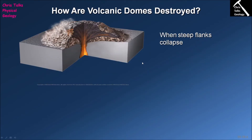Volcanic domes have a rather short life — they don't tend to last that long. Why are they so commonly destroyed? First, a volcanic dome is made of very badly brecciated volcanic rock, meaning it's very granular and not particularly well consolidated. This makes the dome very prone to collapse — the side of the dome can literally slide, like a small landslide. If several landslides occur simultaneously, they can cause quite significant damage to the dome.